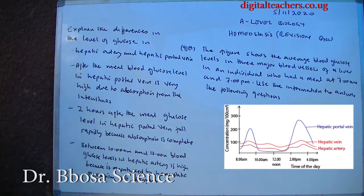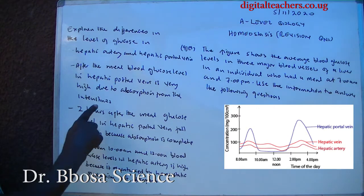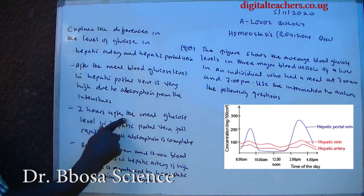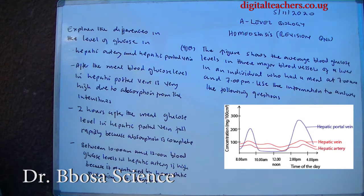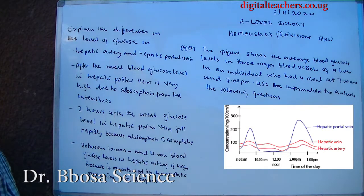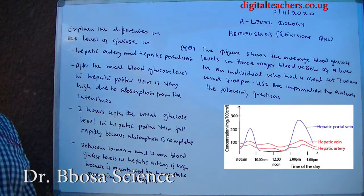Explain the differences in the level of glucose in the hepatic artery and the hepatic portal vein. After the meal, blood glucose level in the hepatic portal vein is very high due to absorption from the intestines. Two hours after the meal, glucose level in the hepatic portal vein falls rapidly because absorption is complete. Between 10 a.m. and 12 noon, blood glucose level in the hepatic artery is higher because it is maintained by homeostatic mechanisms, not absorption, as in the hepatic portal vein.